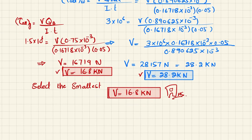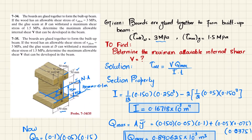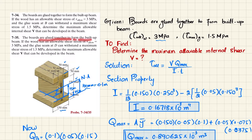Now we move to Problem 7-35. The given data are the same: boards glued together, allowable shearing stress for wood is 3 MPa, and glue seam at D can withstand a maximum of 1.5 MPa. Determine the maximum allowable shear that can be developed in the beam. All steps are the same except we find Q_D instead of Q_B.